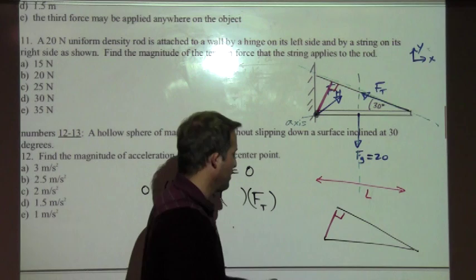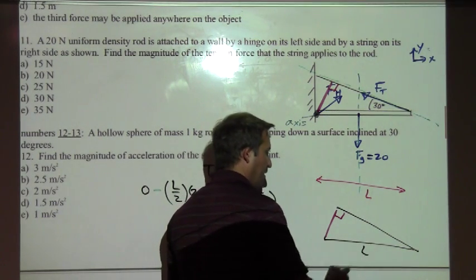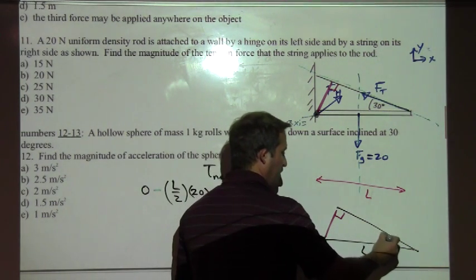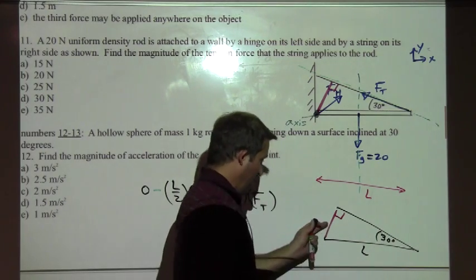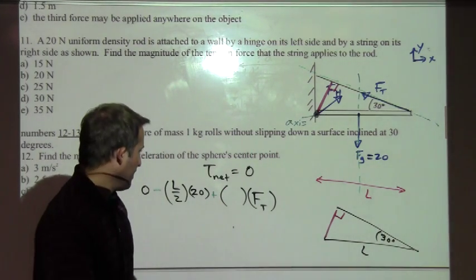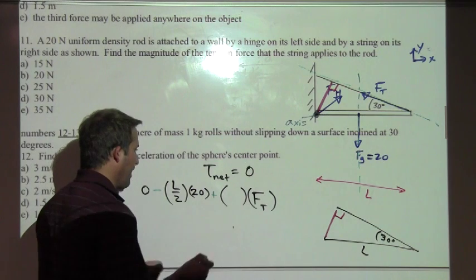Something like this. And we do know some information. This is now defined to be length L. This is 30 degrees. And so we can find this would be L times the sine of 30, L sine 30. And so we can plug that in.